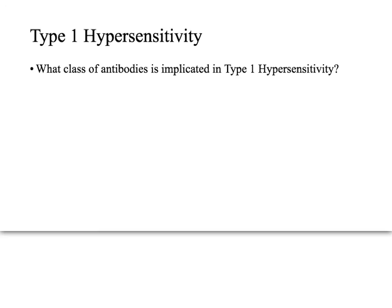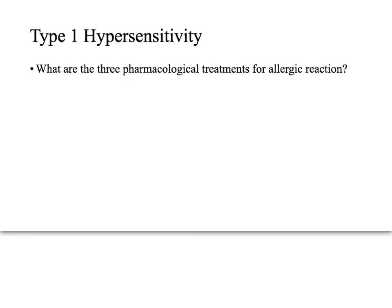Quiz question one: What class of antibodies is implicated in type 1 hypersensitivity? The answer is IgE. Question two: What are the three pharmacological treatments for an allergic reaction? The answers are epinephrine, antihistamine, and corticosteroids.